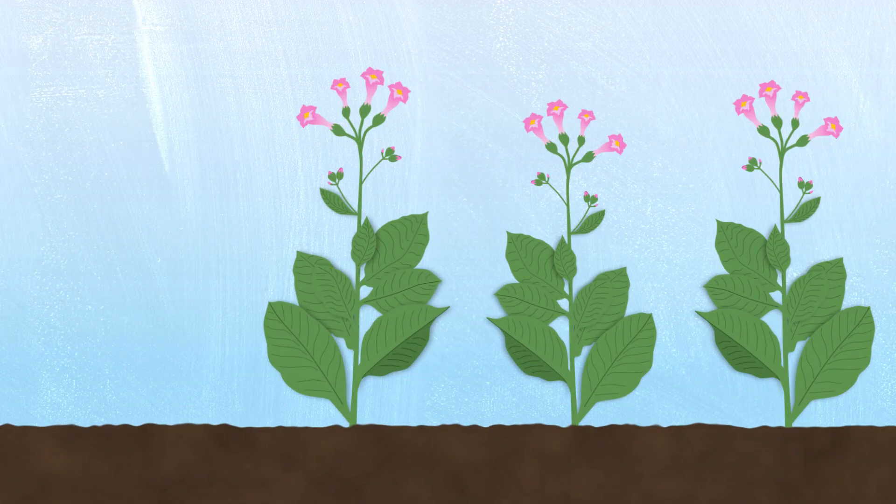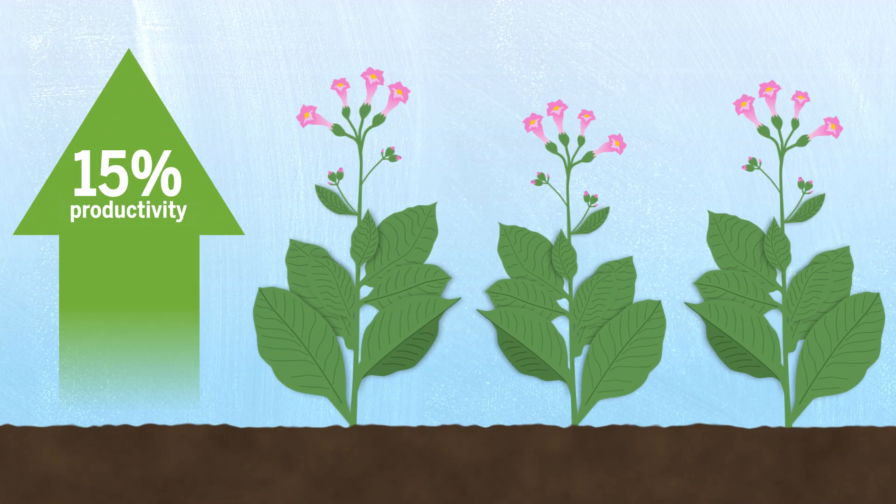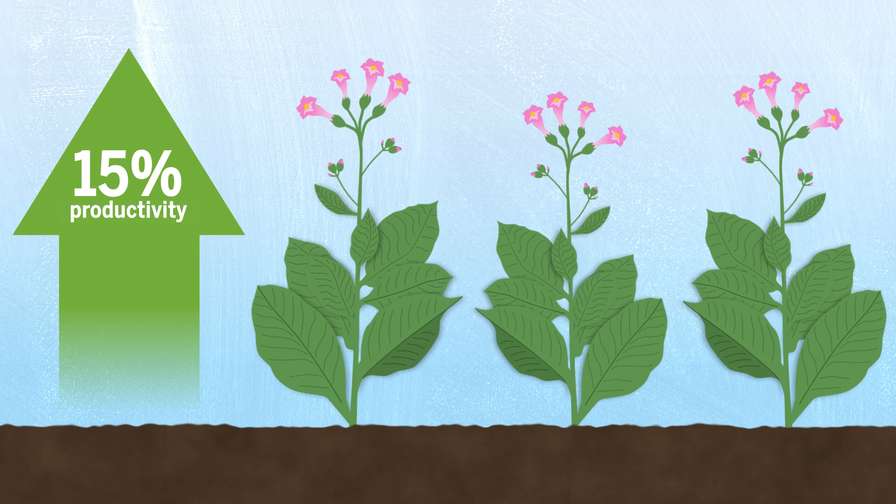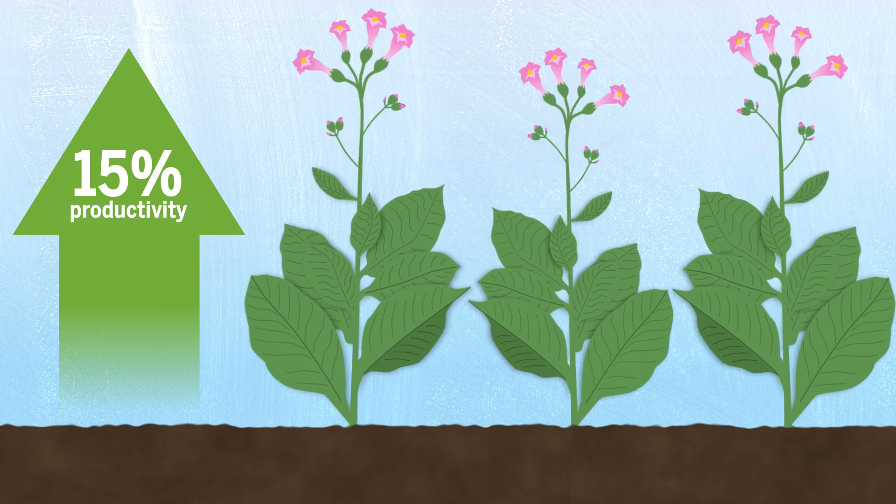Plants with these genetic changes recovered about 15% of their productivity, giving them bigger, broader leaves, taller stocks, even more heft in general.